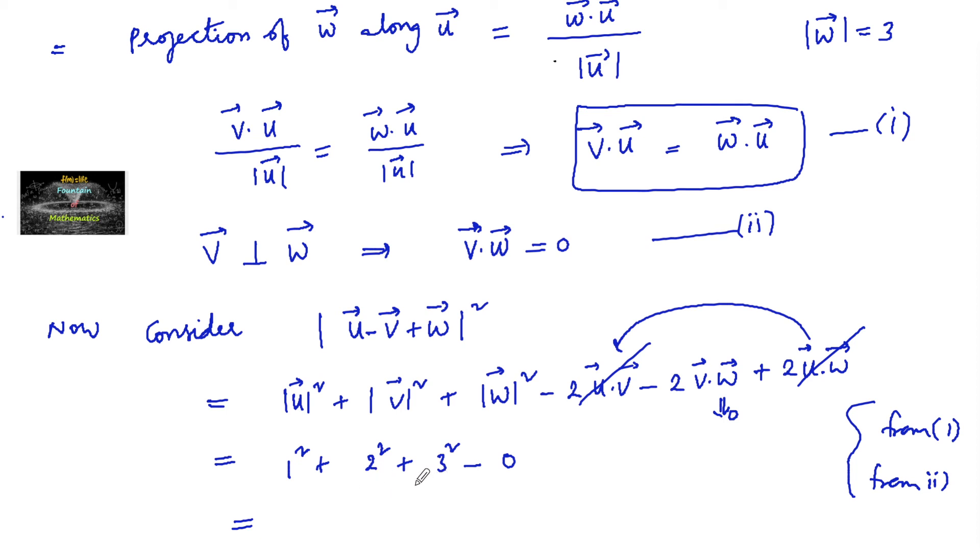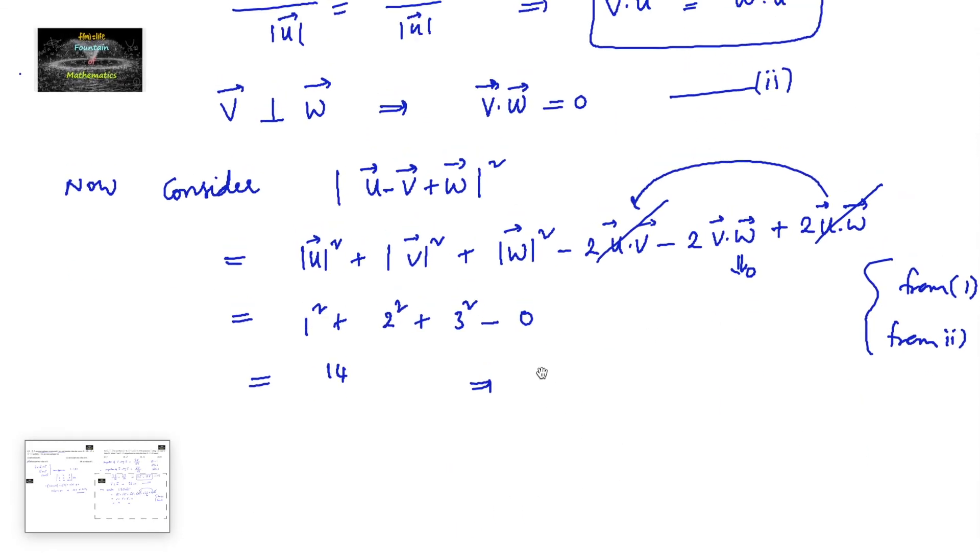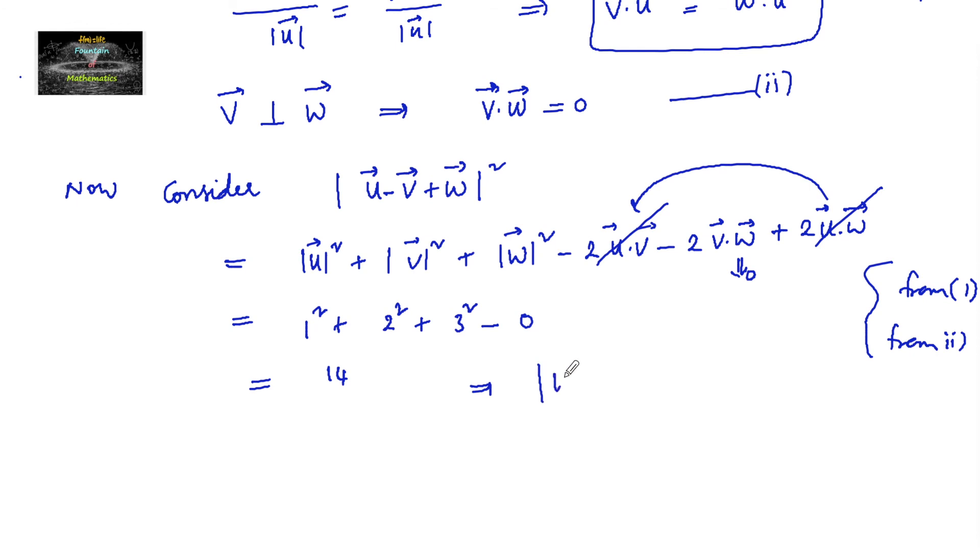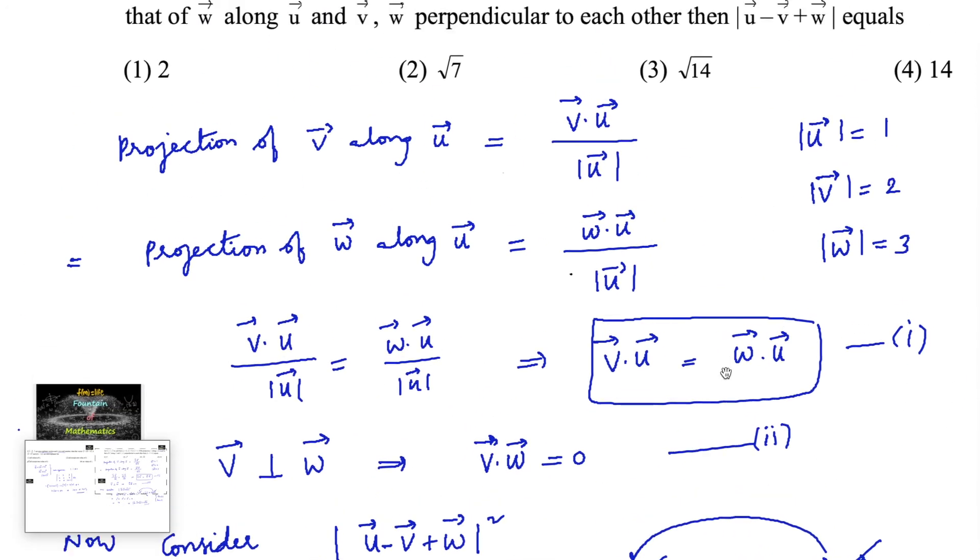We have 1 square plus 2 square plus 3 square: 9 plus 4 is 13 plus 1 is 14, so we can write mod of u minus v plus w is equal to root 14. So we can go with option 3.